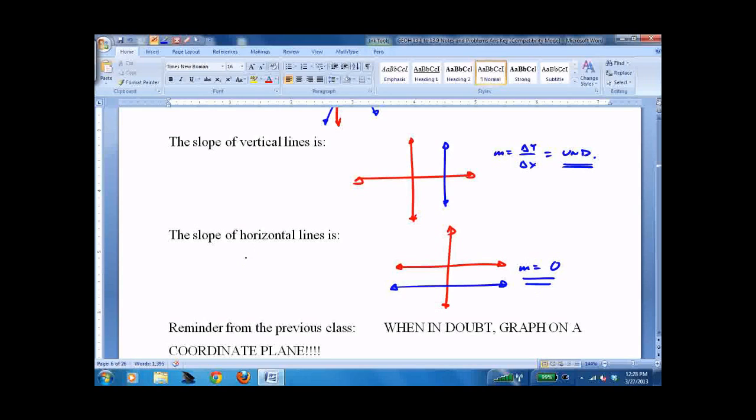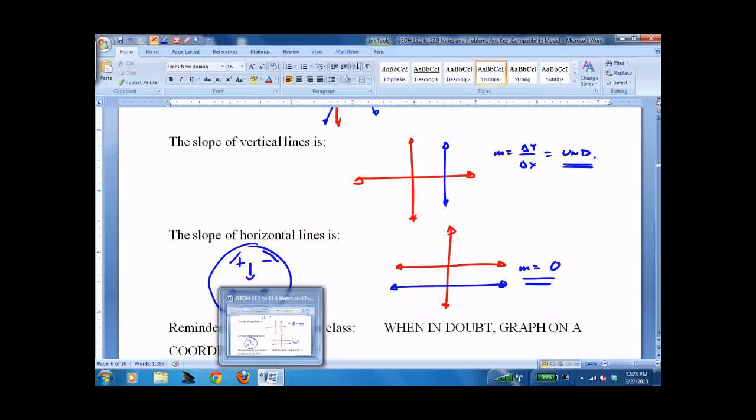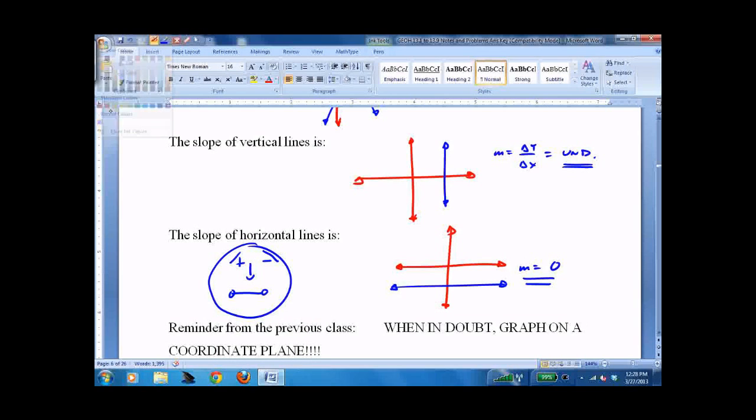It's a new mnemonic I've seen. Slope guy. And his nose is the undefined slope. His mouth is the 0 slope. Hence, the little zeros on the corners. Hence, the little u under the nose.